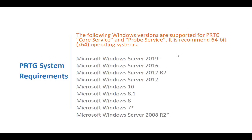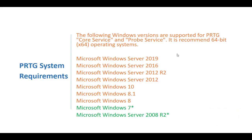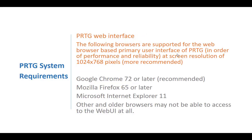PRTG can be installed on various operating systems as a core server or probe server. It is recommended to install on a 64-bit operating system such as Windows Server 2019 or Windows Server 2016. On Windows 7 and Windows Server 2008 R2 you must install the required .NET version manually. For a 64-bit installation you need at least 6 GB of RAM. Note that Windows Server in core mode or minimal server interface is not supported.